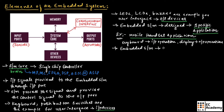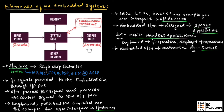Most embedded systems are automatic, which means they do not require any manual intervention for their operation. For an automatic embedded system, a sensor senses the input parameter and passes this information to the processor. Upon receiving the sensor data, the processor performs predefined operations using firmware in memory and sends signals to the output port where actuators perform the desired operation.